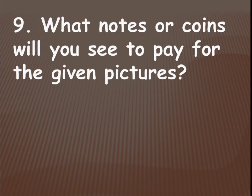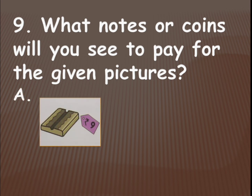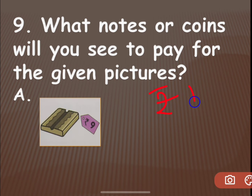Here there is a chocolate — a toffee — which costs 9 rupees. Do we have a 9-rupee note? No. Do we have a 9-rupee coin? No. We can't give directly 9 rupees as we don't have a 9-rupee coin or note. The smallest note available is 10 rupees.